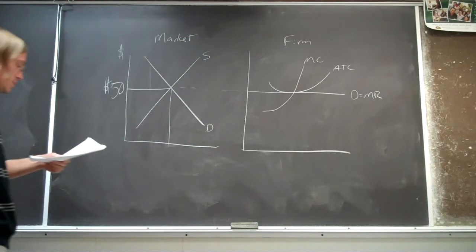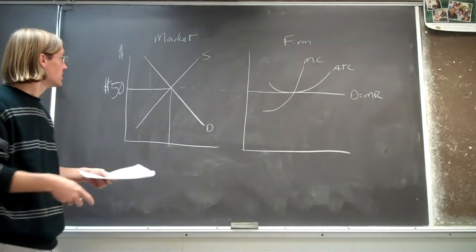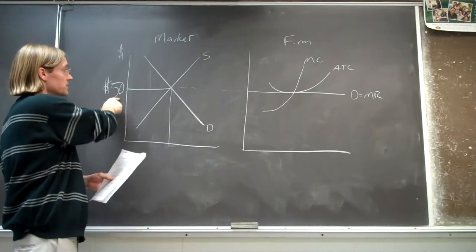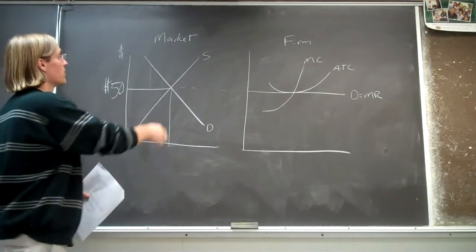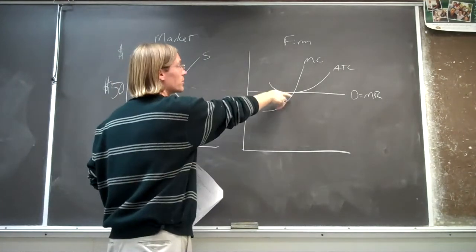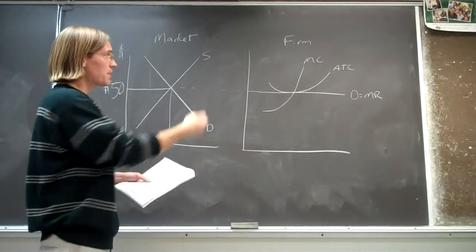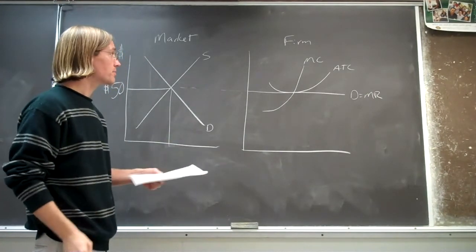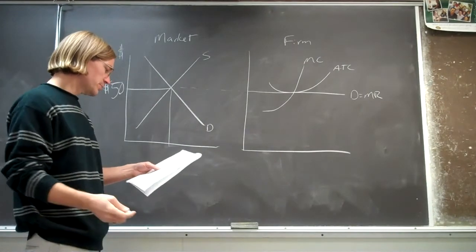All right, we've got a question about a perfectly competitive market, and we suppose that we assume there's this initial price of 50 bucks in this perfectly competitive market. So this is the market price, that market price feeds over to the firms, and the firms are making zero economic profit. That's shown in that graph for the individual firms.